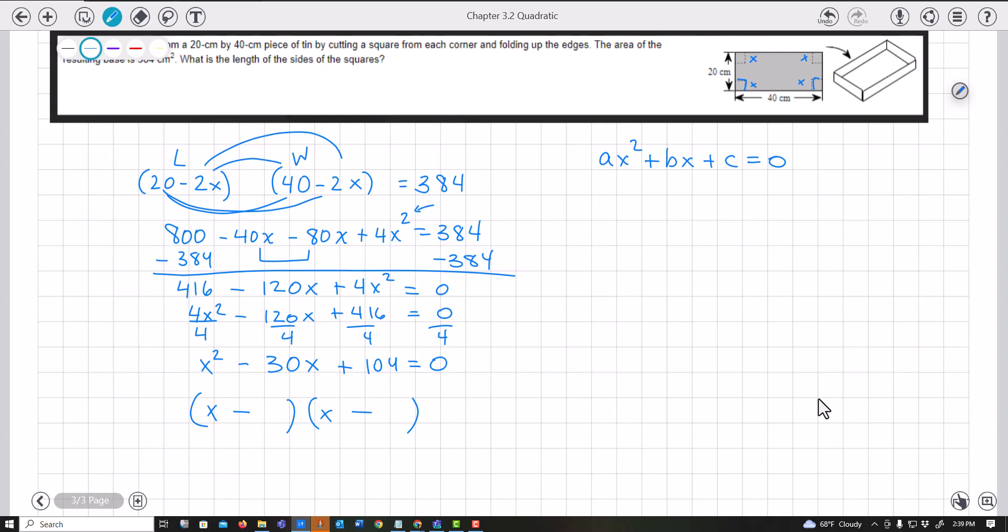I didn't know what two factors of 104 would work. I used my calculator, dividing by 4, and found that 4 times 26 works. When you add those, you get the middle value. Continuing with this, X equals 4 or X equals 26.